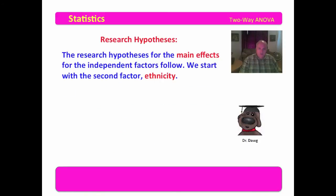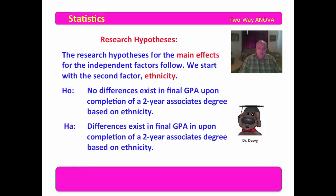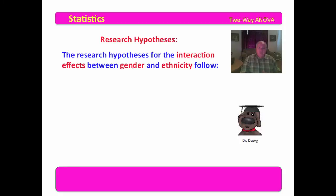We continue with the research hypotheses for ethnicity. The null is that no differences exist in final GPA upon completion of a two-year associate's degree based on ethnicity. The alternate is that differences exist based upon ethnicity. This is almost identical to what you did in your one-way ANOVA. When you look at gender and ethnicity in the two-way, you're looking at those as if you were doing a one-way ANOVA.